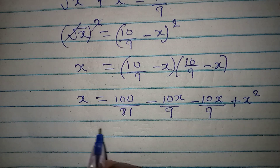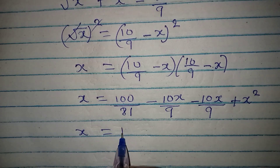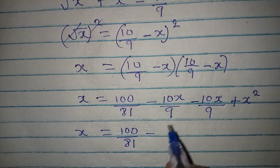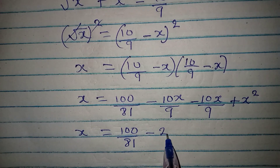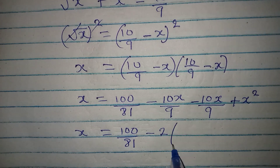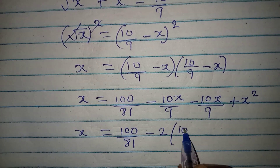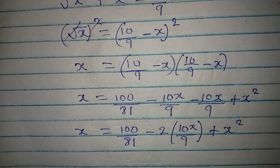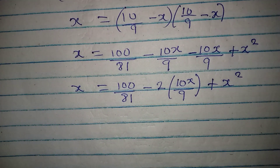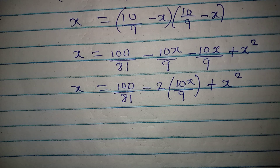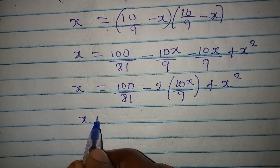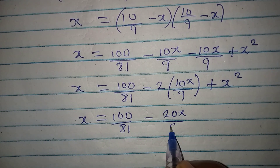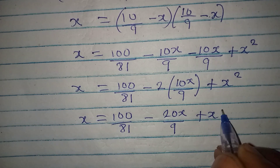Continuing, we have x equal to 100 over 81. Putting the two middle terms together gives us minus 20x over 9, then plus x squared. So we have x equal to 100 over 81 minus 20x over 9 plus x squared.